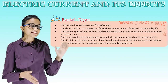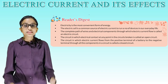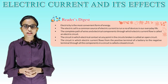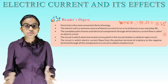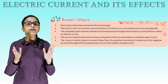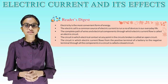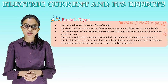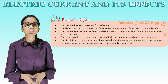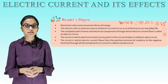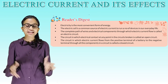It's time for a recap. Electricity is the most convenient form of energy. The electric cell is a common source of electric current to run a number of devices in our everyday life. The complete path of wires and electrical components through which electrical current flows is called an electric circuit. The circuit in which electrical contact at any point is broken is called an open circuit. The circuit in which electric current flows from the positive terminal of a battery to the negative terminal through all the components is called a closed circuit. We'll meet in the next class. Bye.